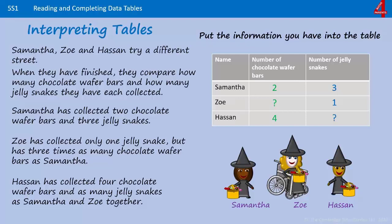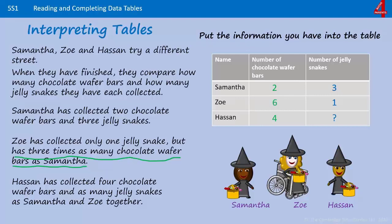Now I'm going to go back and see if I have the information I need to replace those question marks with values. The first one — we need to know how many chocolate wafer bars Zoe collected. For Zoe, it says she collected three times as many chocolate wafer bars as Samantha, so we look at how many Samantha collected, which is two. Zoe had three times as many: two times three is six.